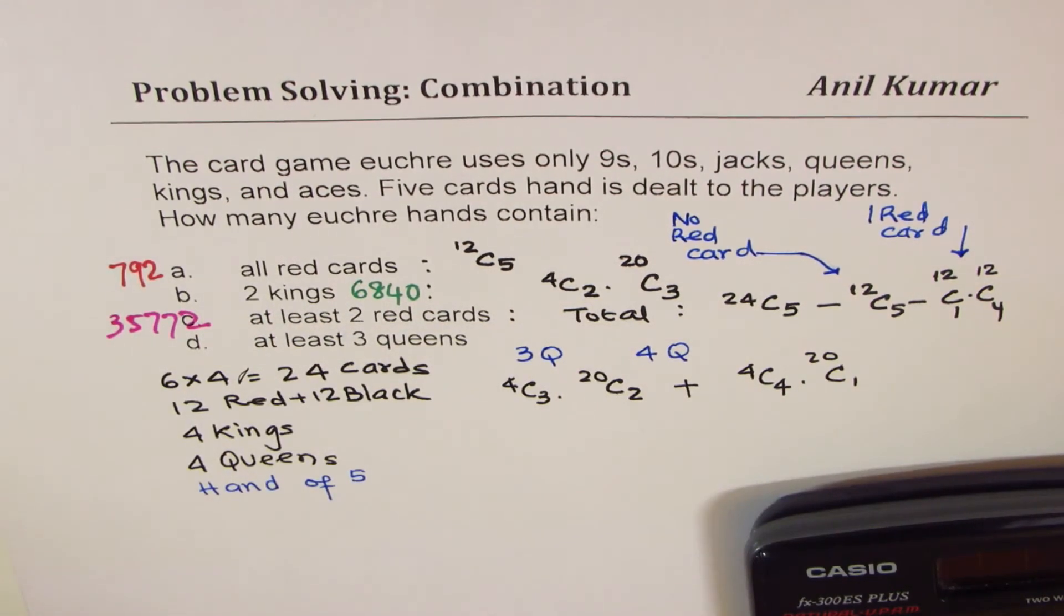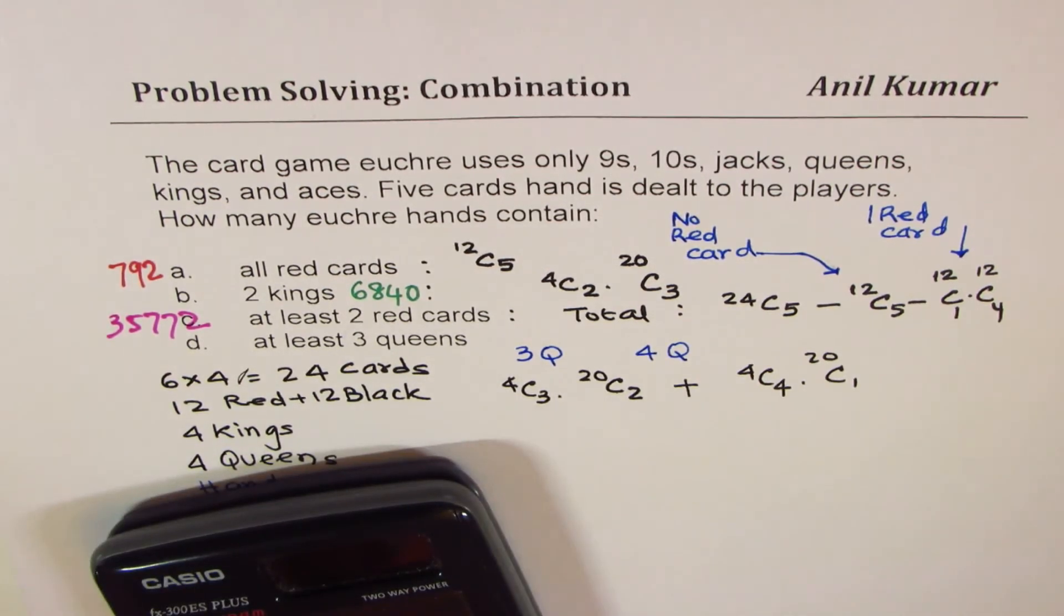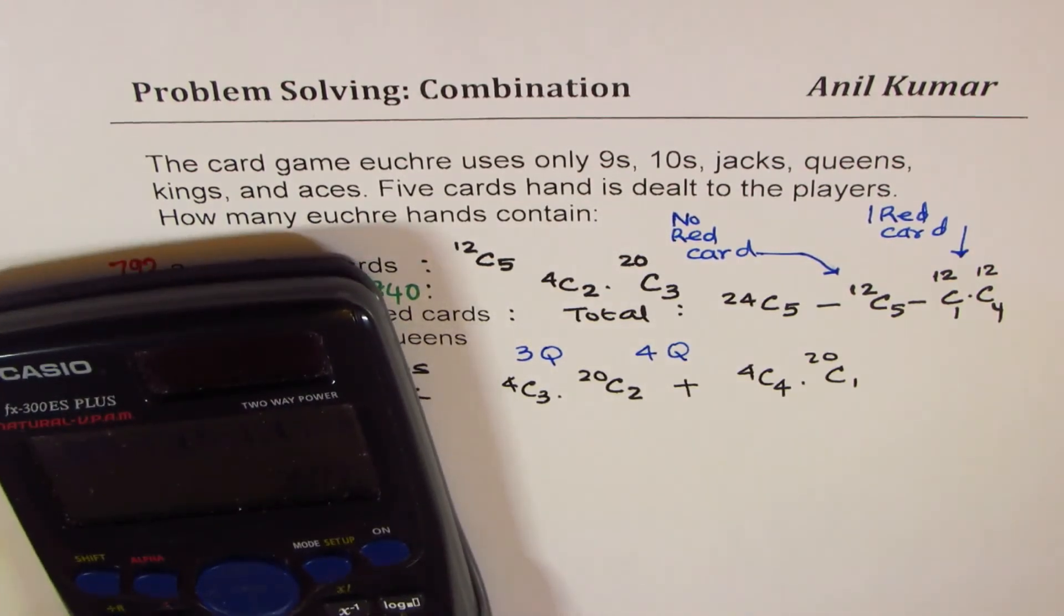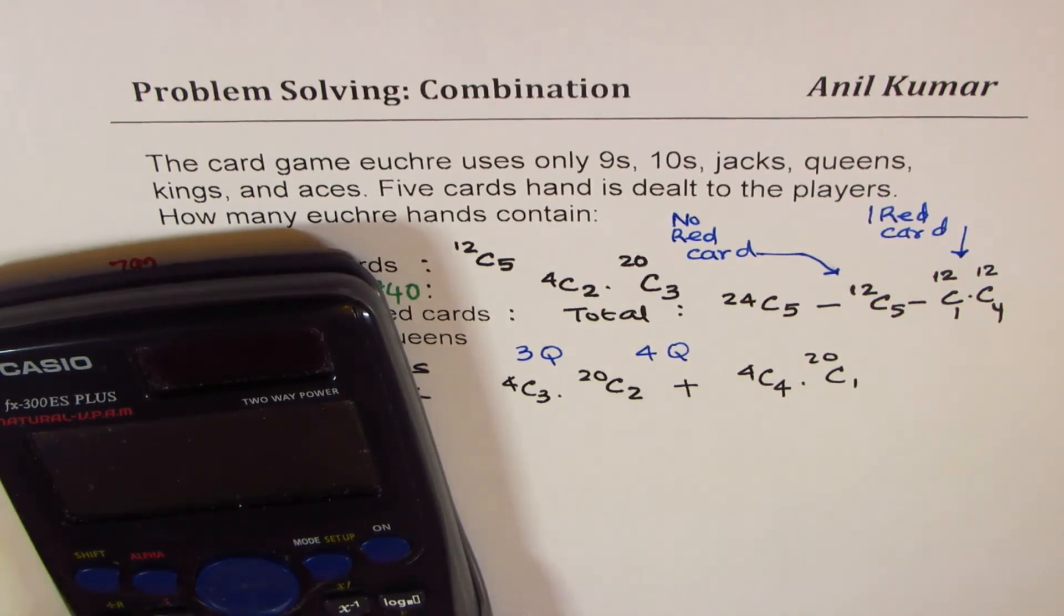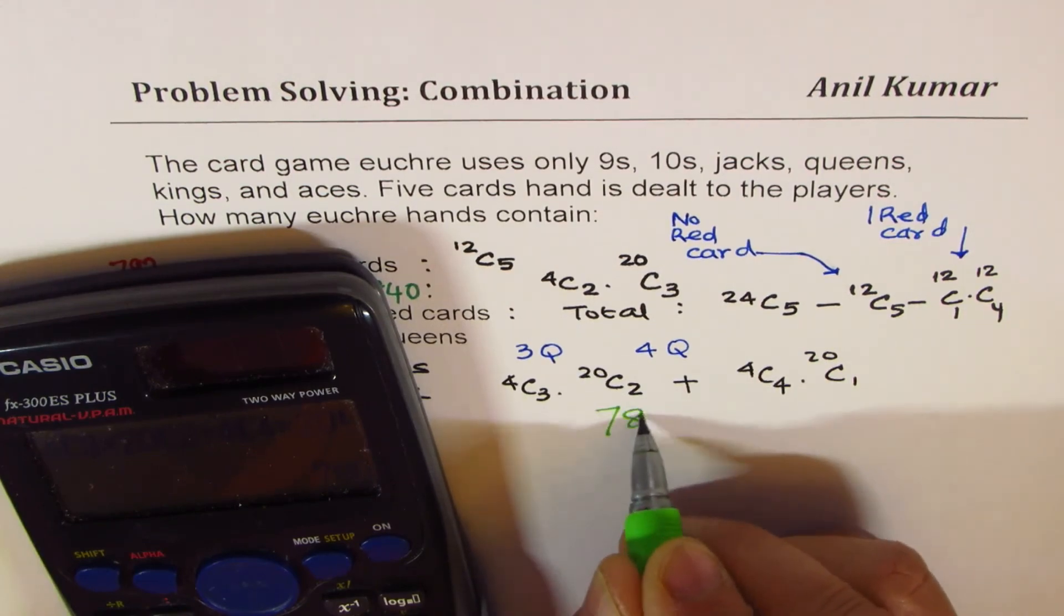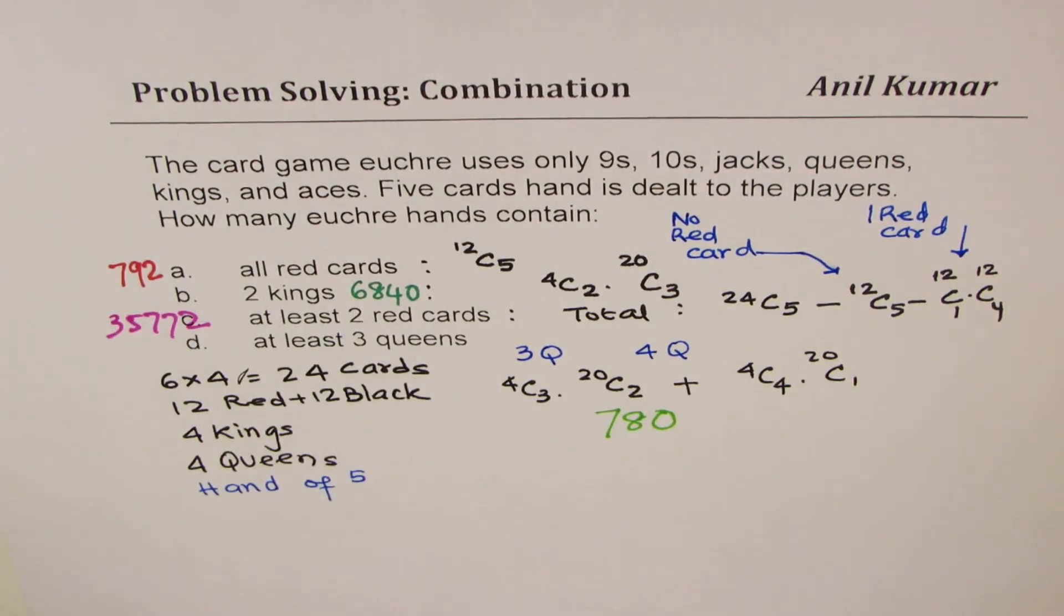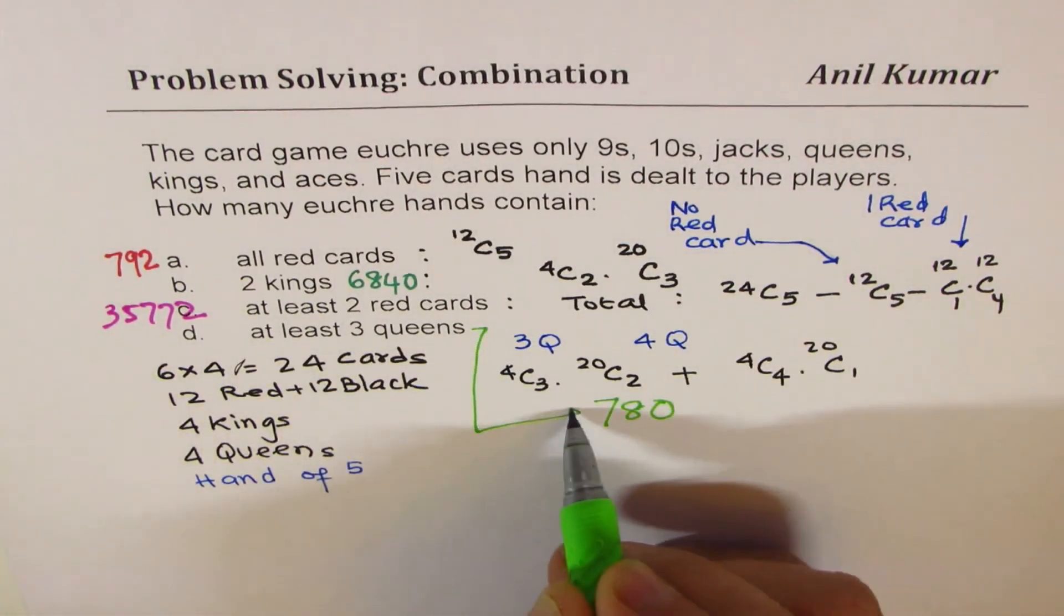Okay, the last one, at least three queens. So at least three queens, let's sum this up. How much do we get? So we have 4C3 times 20C2 plus 4C4 times 20C1. So that gives you a number which is 780. So that is how you can actually solve such questions.